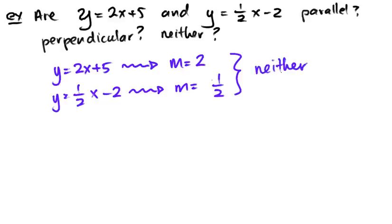If the second slope had been negative one half instead, and this was also negative one half, then yes, we would have perpendicular lines.